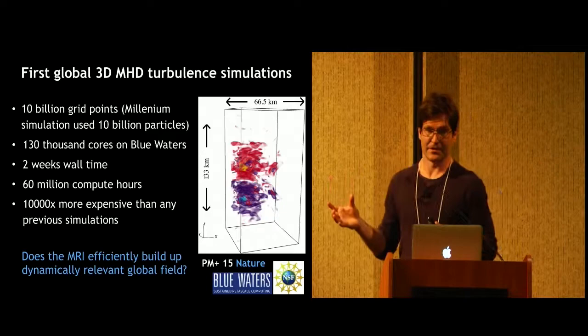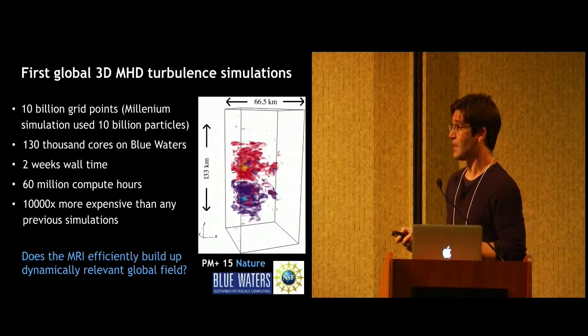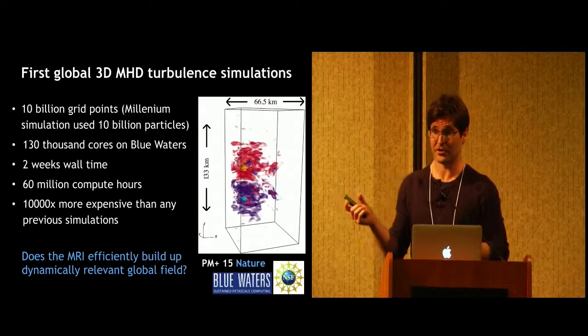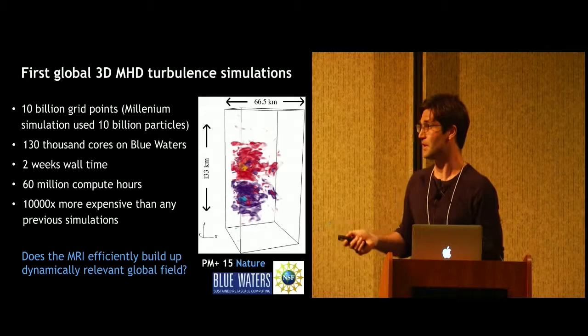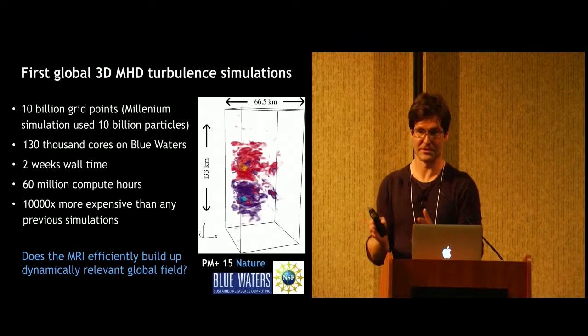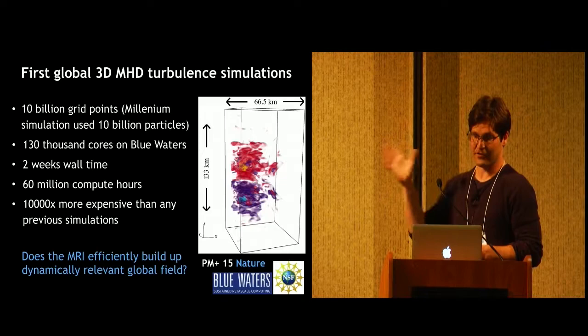What we then set out, and this was something that we completed at the end of 2015, is to do a first global 3D MHD simulation, where we actually resolve the magnetorotational instability, and then see if we start from a more realistic initial seed field on an iron core, but throw the high resolution that is needed to resolve this instability at the problem, do we get what we expect from all these hand-waving arguments that we had assumed in the previous simulations? And this is what we set up, so this was 10 billion grid points, run on 130,000 cores on Blue Waters in parallel for roughly about two weeks' wall time, so this was 60 million compute hours, and compared to the same time scale that we would simulate in a previous simulation, this is 10,000 times more expensive per unit time evolved in this simulation.